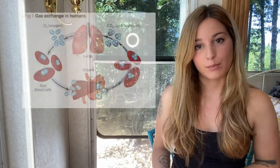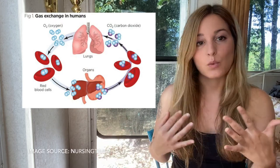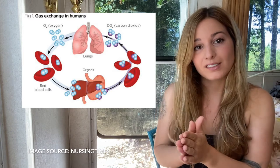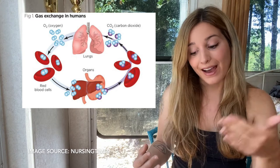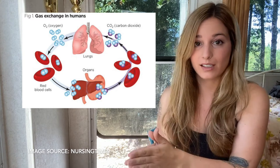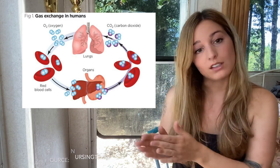Our bodies are always trying to find homeostasis — we're always trying to balance everything out. The main organs involved in our pH balance are the lungs and the kidneys. For example, CO₂ or carbon dioxide is mildly acidic; it's a waste product of the processing of oxygen and nutrients in the body. Carbon dioxide passes from cells into the blood, and blood brings it to the lungs where it's exhaled. If carbon dioxide accumulates in the blood, the blood becomes more acidic.